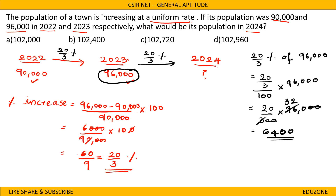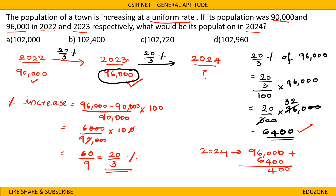The increase in population is 6,400. So the population in 2024 will be 96,000 plus 6,400, which equals 1,02,400. Option B is the correct answer.